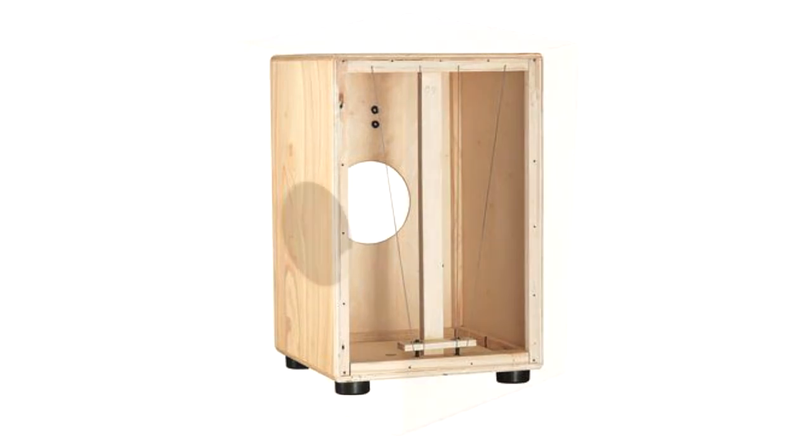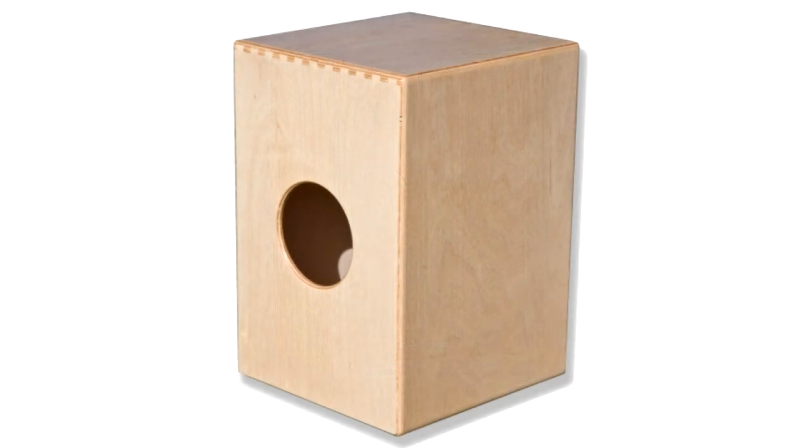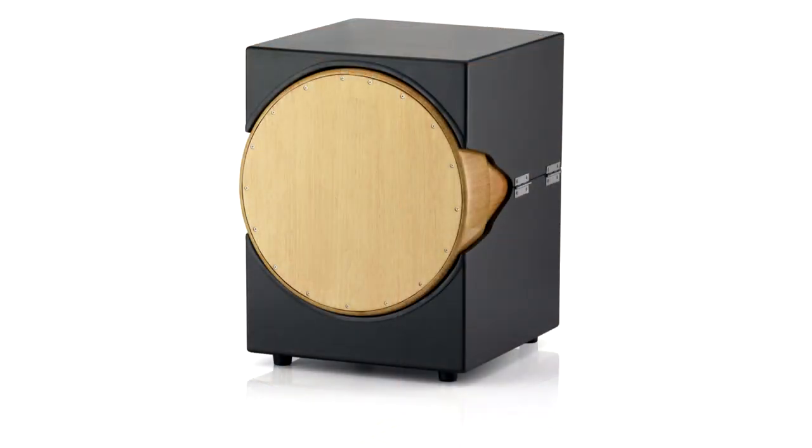As flamenco evolved with assimilation of cajon, the disposition of percussive sounds in guitar patterns gradually through time shaped cajon patterns. Not just with golpes, but in every aspect, cajon is imitating the guitar.